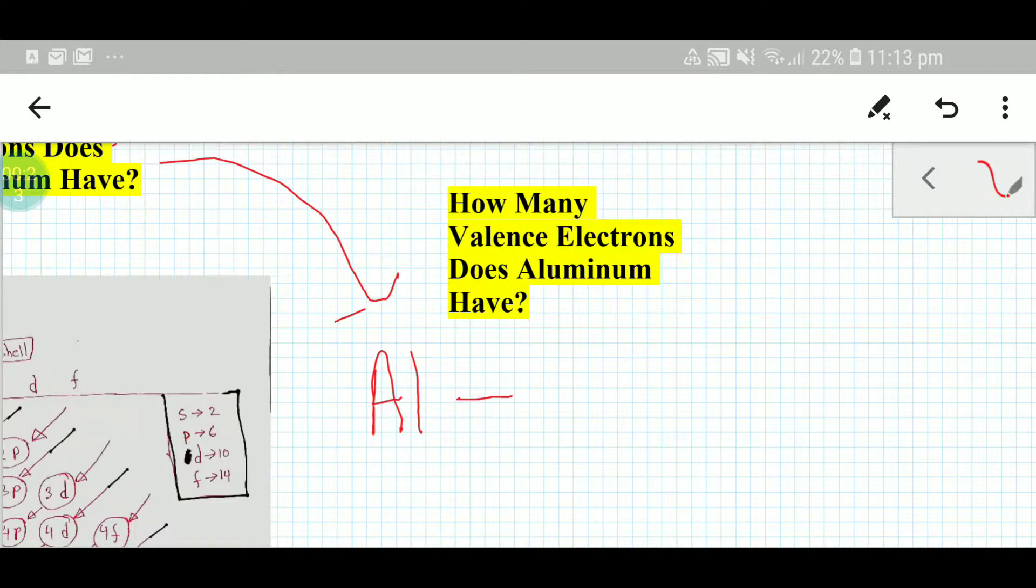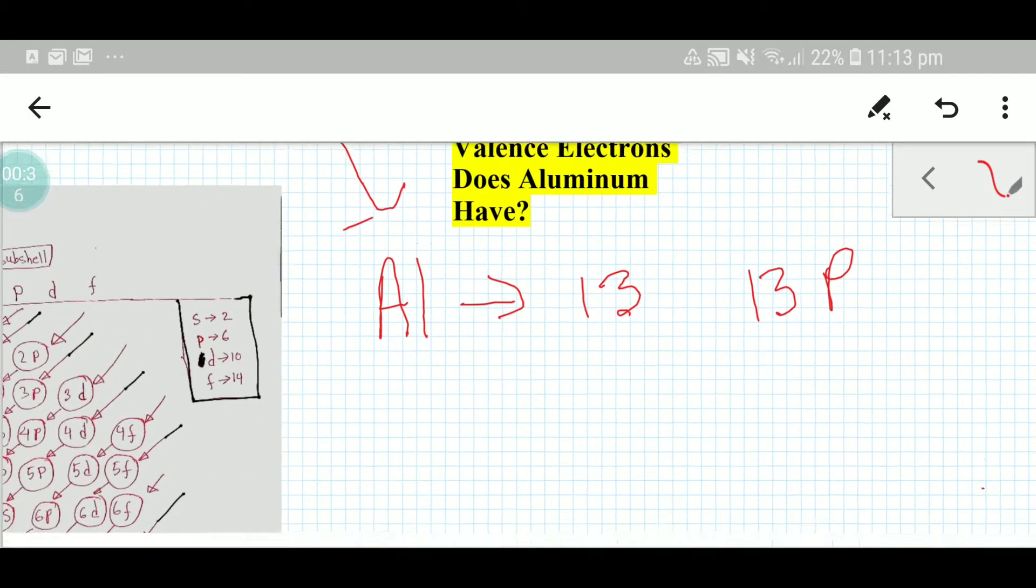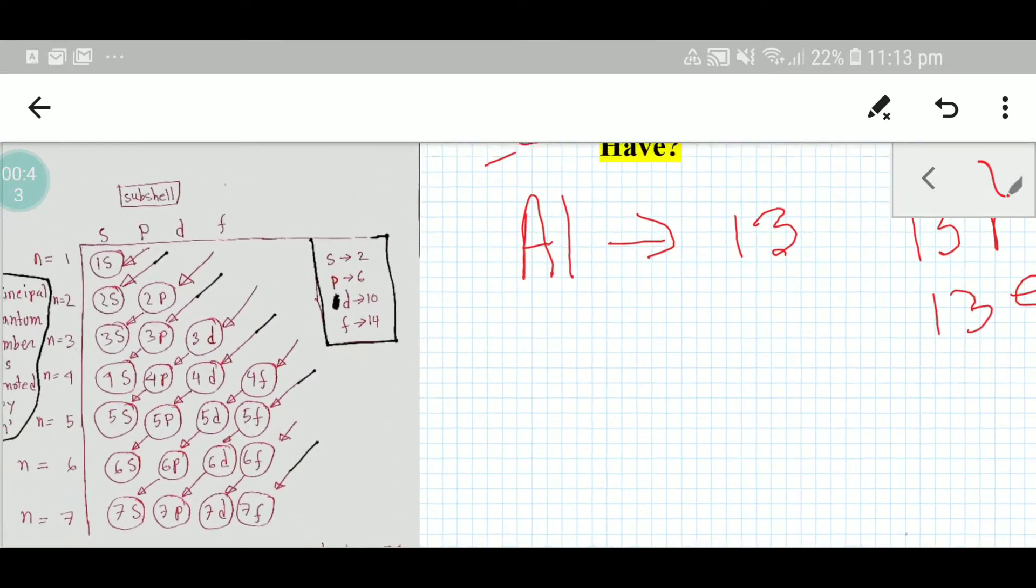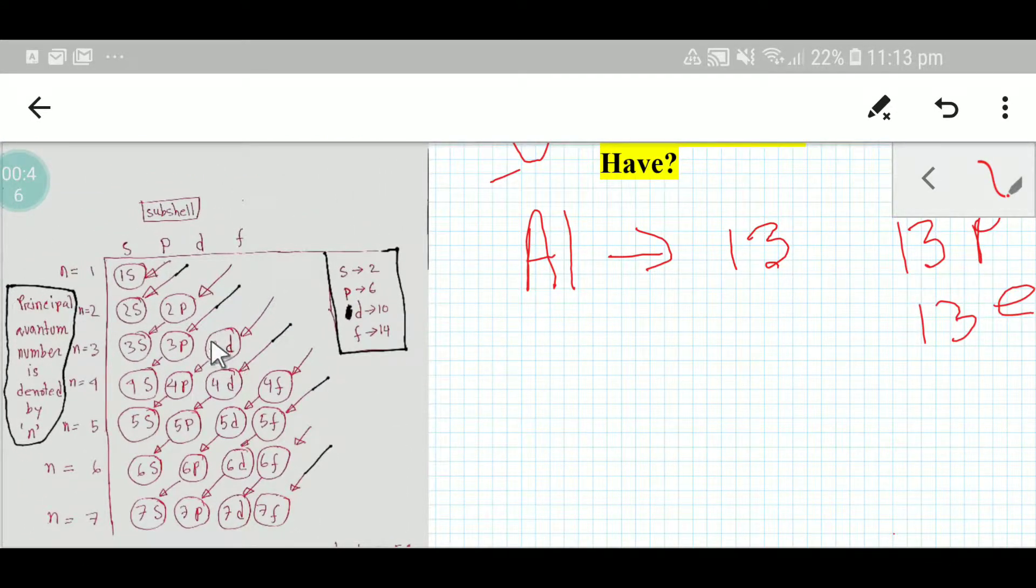From the periodic table we see that the symbol for aluminum is Al and its atomic number is 13. This means that aluminum has 13 protons and 13 electrons.